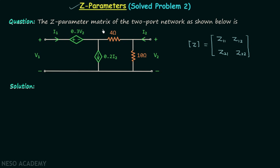Now I will provide the solution in which I will explain how we can calculate the Z parameters of this two-port network. In step number one, we assign the currents in all the branches of the given two-port network.